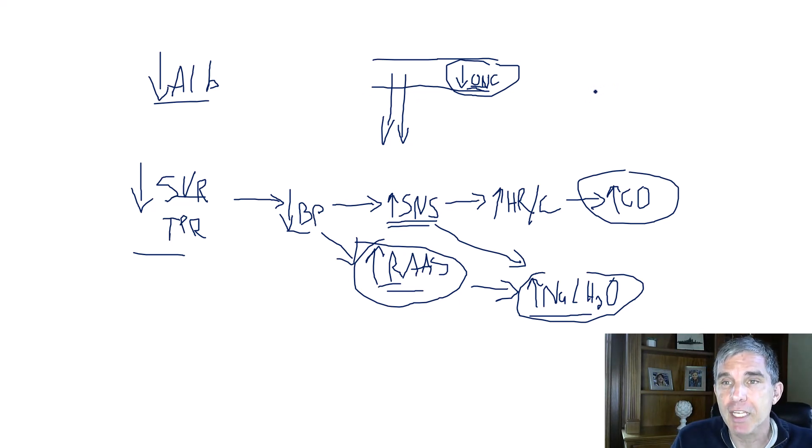So when the liver is cirrhotic, blood cannot flow through it and blood backs up behind the liver, and that raises the pressure in vascular structures in the abdomen. That's going to increase the hydrostatic pressure in capillaries. There are two important properties of capillaries: the oncotic pressure and the hydrostatic pressure.